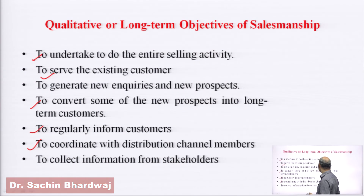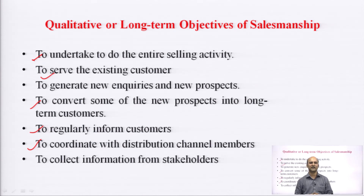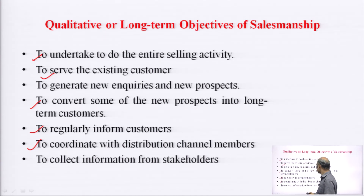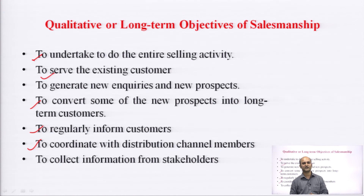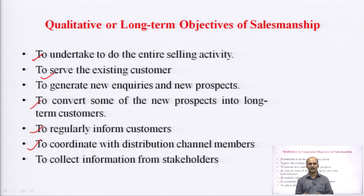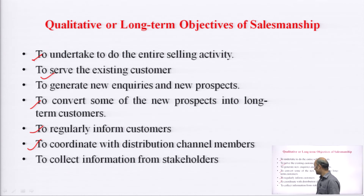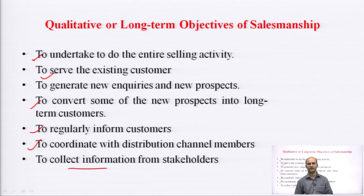Another qualitative objective is to coordinate with distribution channel members and collect information from stakeholders. You have to collect information from retailers, wholesalers, and distributors. In the pharma industry, for example, a medical representative collects information from retailers, wholesalers, distributors, and C&F agents and gives feedback to the company. Stakeholders are persons directly or indirectly associated with the company.